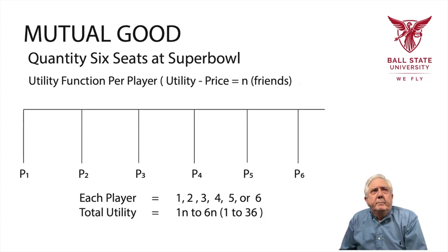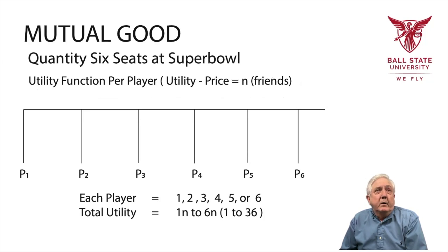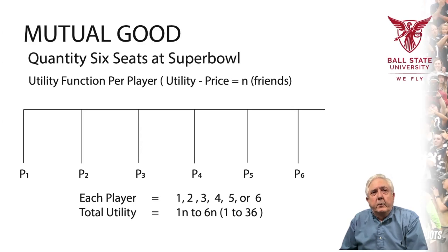Now let's talk about mutual goods for a moment. We have a situation in which we want to have six seats at the Super Bowl. The utility function for each player in this game — and there are six people — is: utility minus price equals N, for the number of friends they go with. So if they go by themselves, the utility is one. If they go with another friend, it's two, and the other one gets two. If they go with a third friend, they each get three, and so on all the way to six.